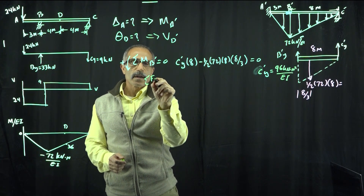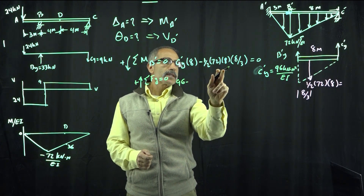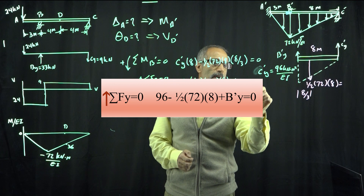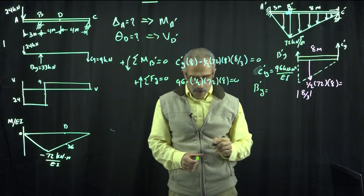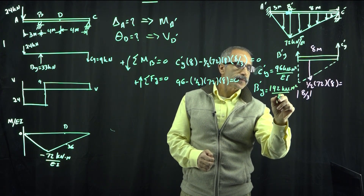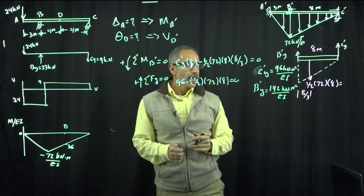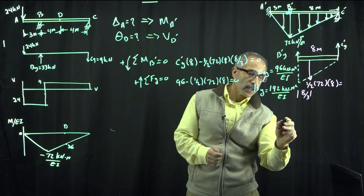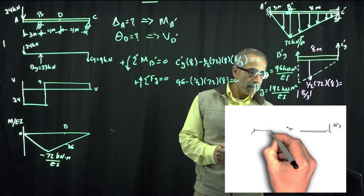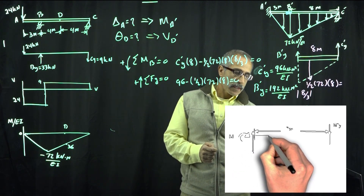Doing summation FY equal to zero, going up positive: 96 minus one-half times 72 times 8 equals zero, so BY prime comes out to 192 kilonewton·meter squared divided by EI. Now we move to the other side and figure out the reactions on that side. Drawing the free body diagram for the left side, we already know CY prime came out to 96, and we have the load of 72.